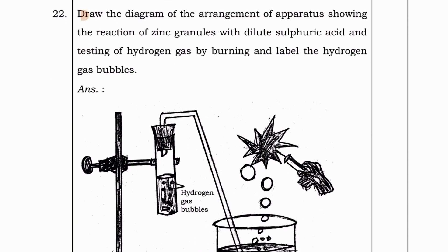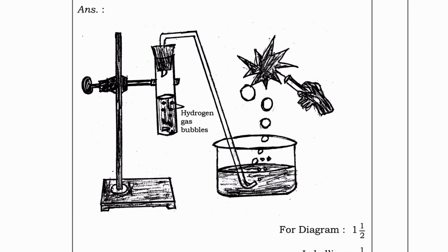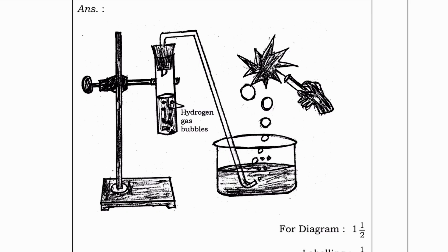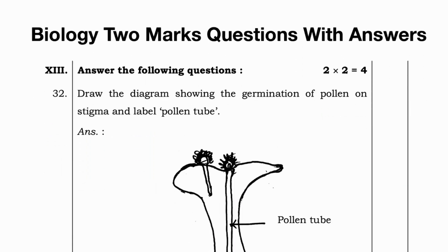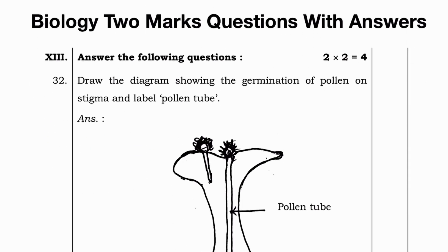Next question. Draw the diagram of the arrangement of apparatus showing the reaction of zinc granules with dilute sulfuric acid and testing of hydrogen gas by burning and label the hydrogen gas bubbles. I am assuming you are all familiar with the diagrams. So, I am not gonna explain anything. Let's go to next part.